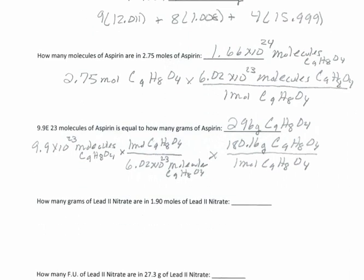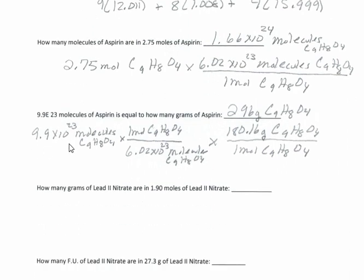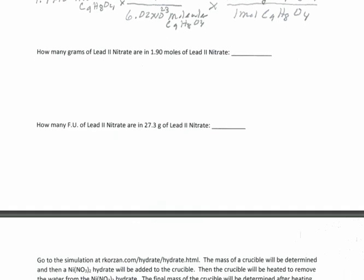Now what about grams? Converting from molecules to grams requires two steps. Starting with 9.9 × 10²³ molecules, first multiply by one mole over 6.02 × 10²³ to get moles, then multiply by 180.16 grams of aspirin per one mole. That gets us 296 grams of aspirin. So first get into moles, then multiply by molar mass to get grams. That's our front side — mole conversions.